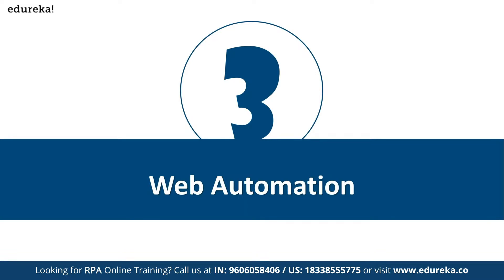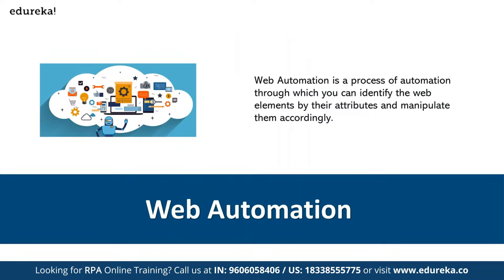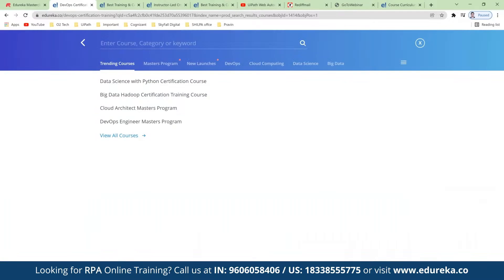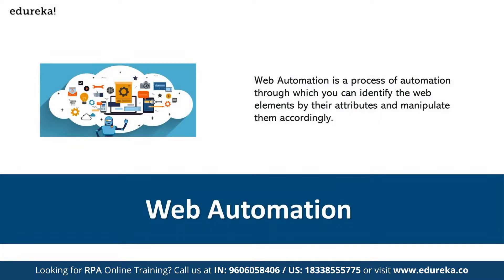Now let's look at what UiPath can do — specifically web automation. Web automation is the process of automating interactions with web elements by identifying them through their attributes and manipulating them accordingly. In any website, everything you see — buttons, text, labels — are UI elements. If you want to read text or click a button automatically, that is web automation.